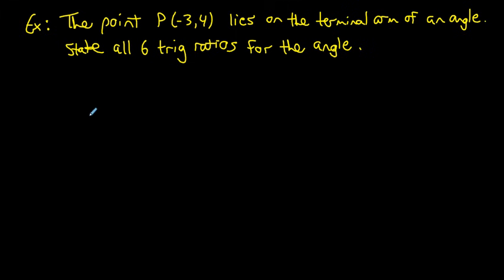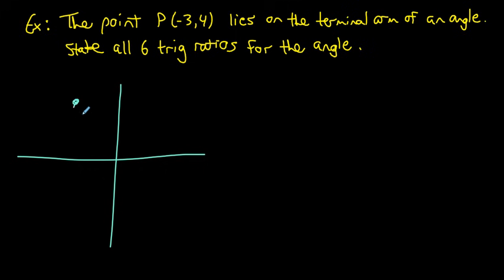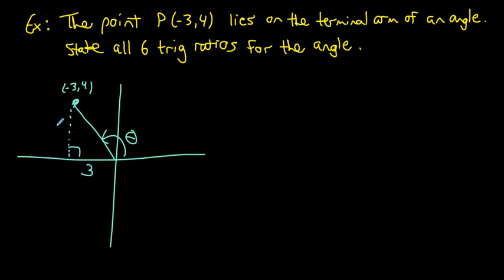For the last trig geometry question, a point (−3, 4) lies on a terminal arm. Connecting it down to the x-axis forms a right triangle. We need to state all six trig ratios for the angle θ. Moving 3 units left and 4 units up, the Pythagorean theorem tells us the hypotenuse is 5. By the CAST rule, we're in the second quadrant, so sine is the only positive primary ratio.